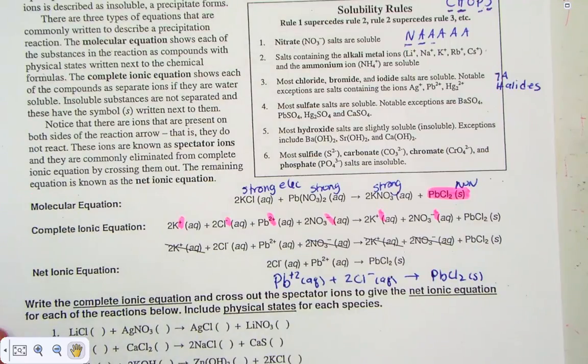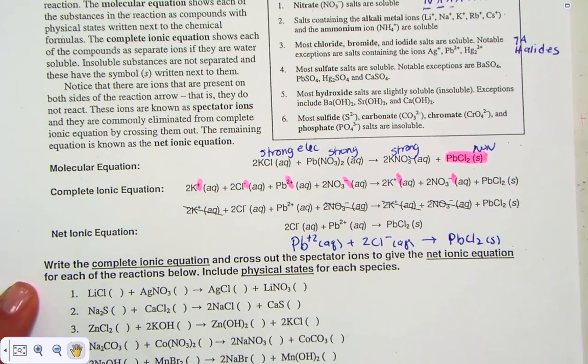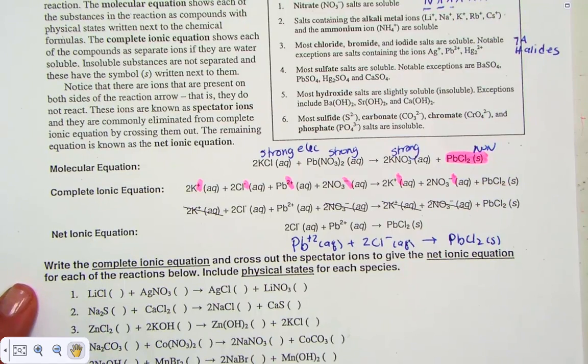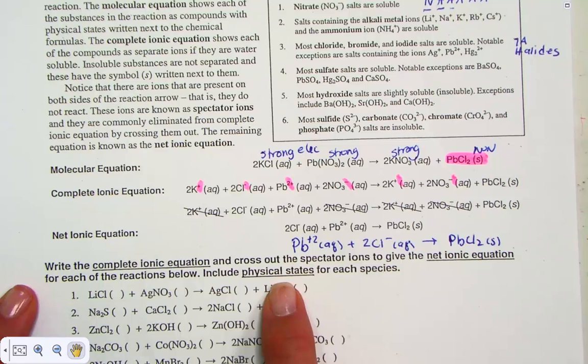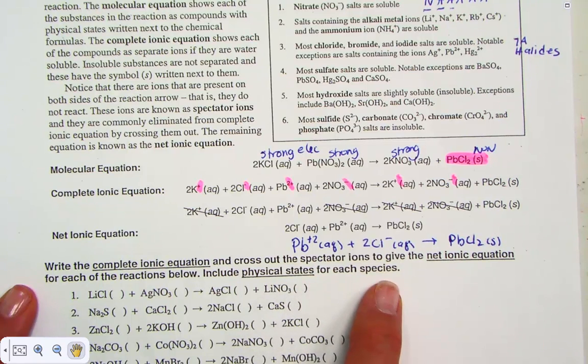You try it. We're going to write complete ionic equations, cross out the spectator ions to give the net ionic equations. Be sure to include the physical states for each species.